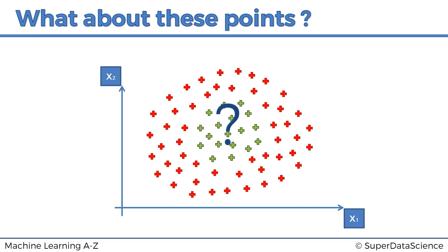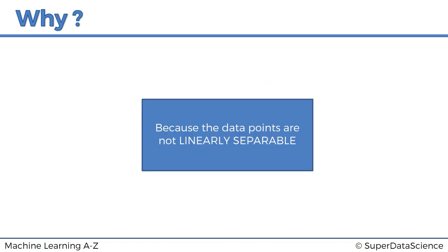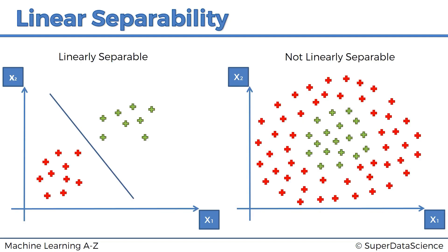Well, this happens because the data is not linearly separable. Here we've got two examples side by side: on the left the linearly separable data, and on the right the non-linearly separable data. The support vector machine algorithm helps us find and correctly place that decision boundary.